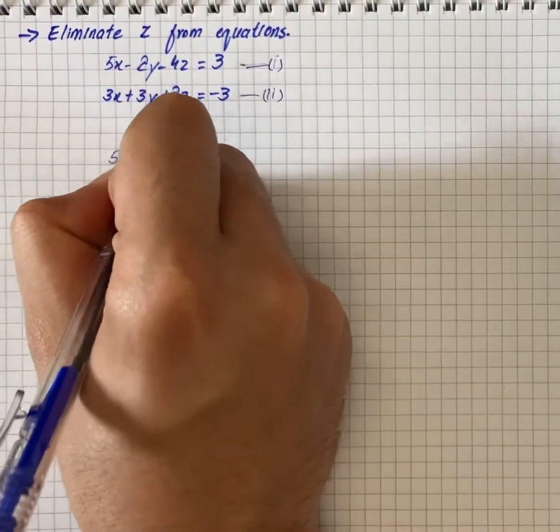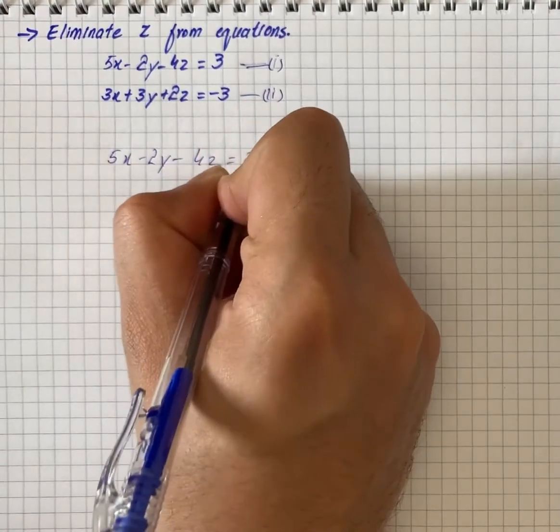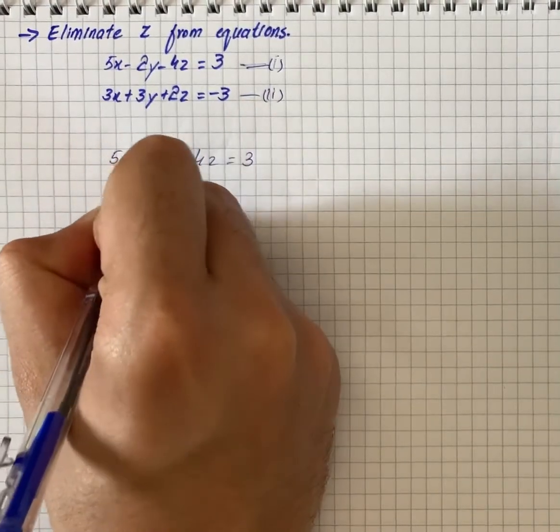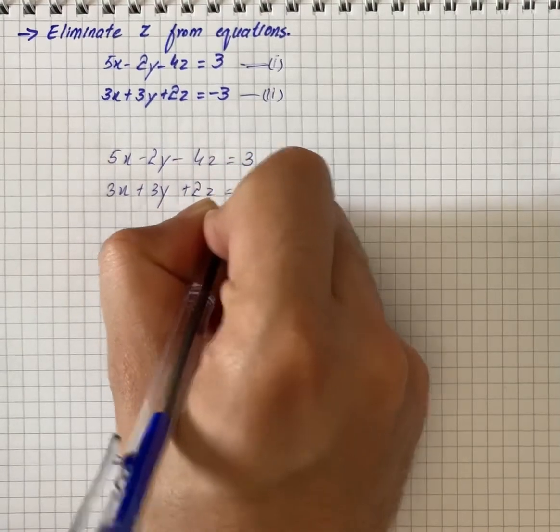So first of all we will write the equations: 5x minus 2y minus 4z is equal to 3, and 3x plus 3y plus 2z is equal to minus 3.